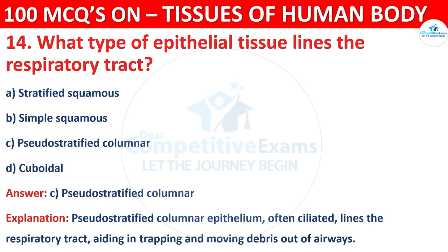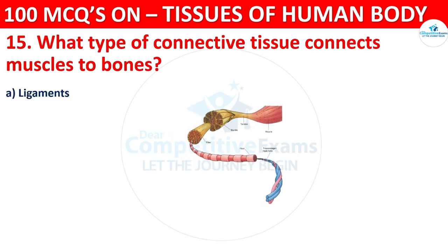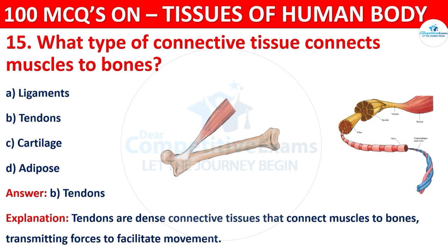Question number fifteen: what type of connective tissue connects muscles to bones? Options are ligaments, tendons, cartilage, or adipose. The correct answer is B, that is tendons. Tendons are dense connective tissues that connect muscles to bones, transmitting forces to facilitate movement.